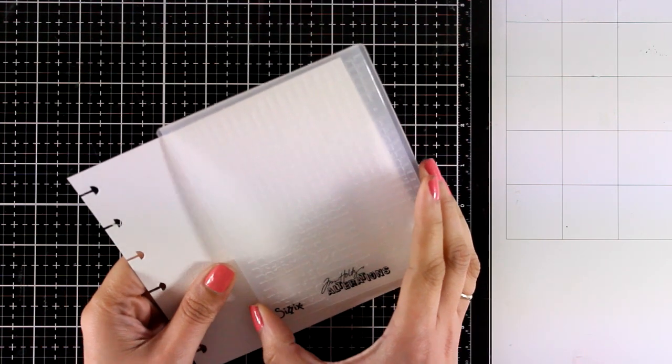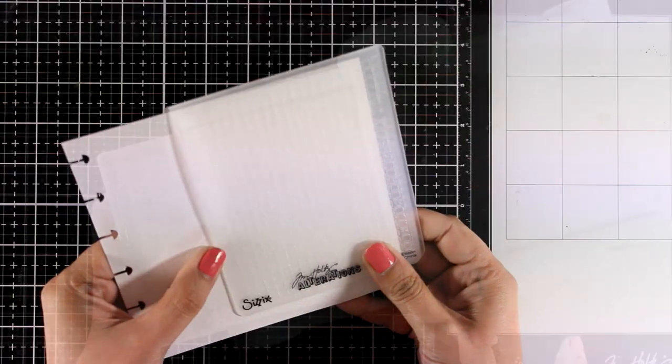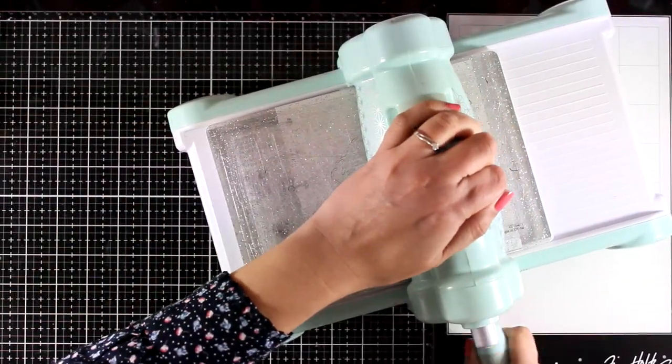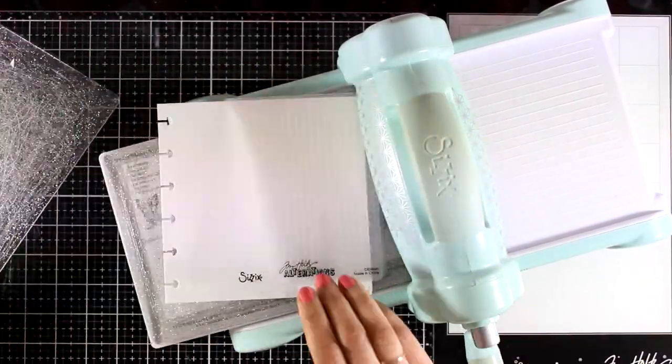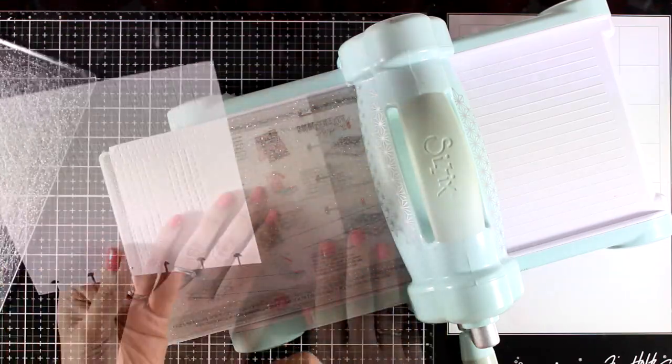For example, I can do embossing. This is a C6 embossing folder which I am going to run through my Big Shot. I do have this opportunity since I'm working on a 6x6 page.